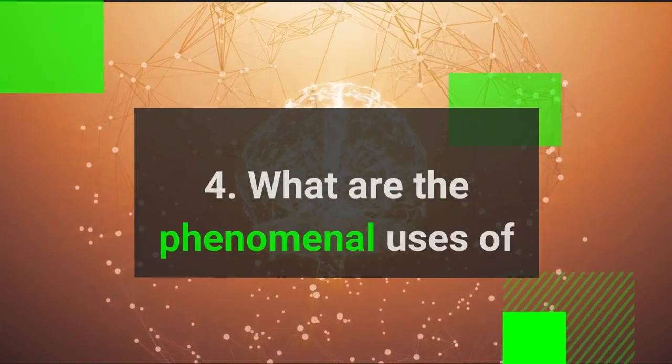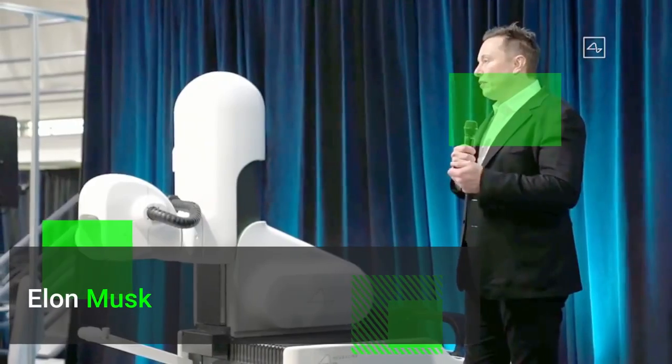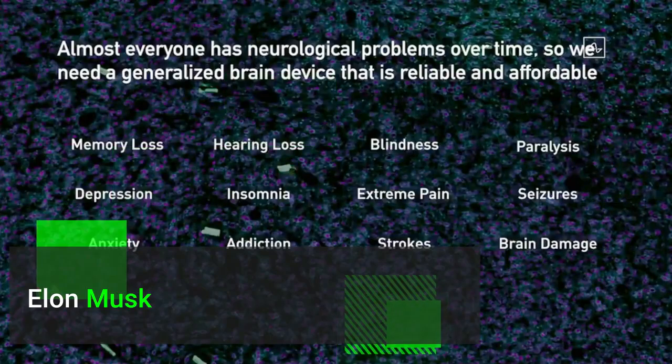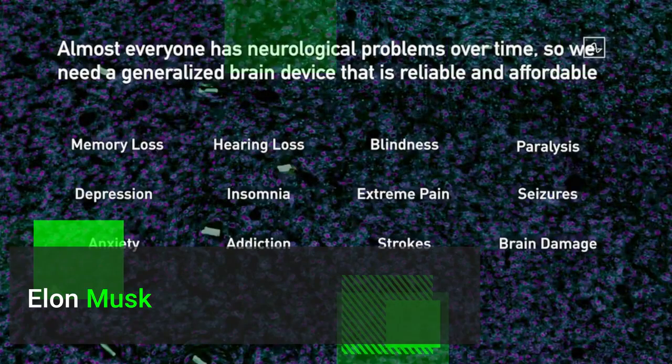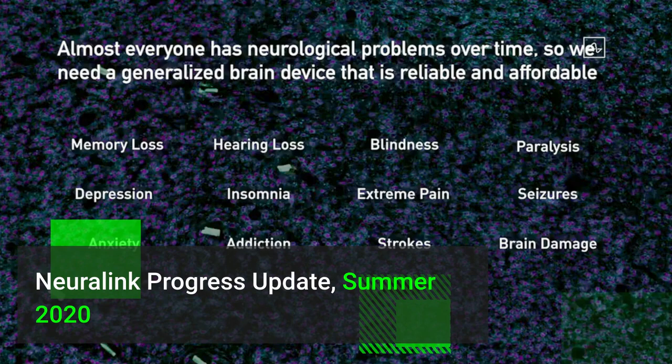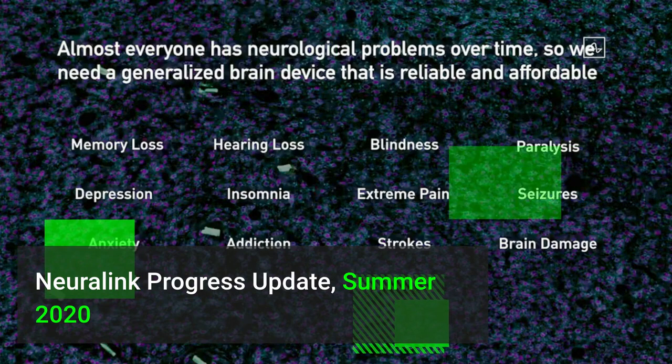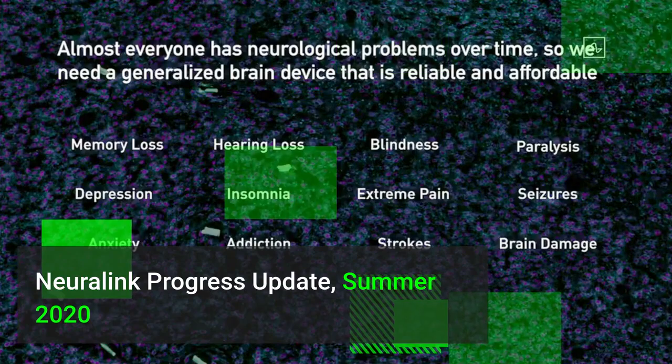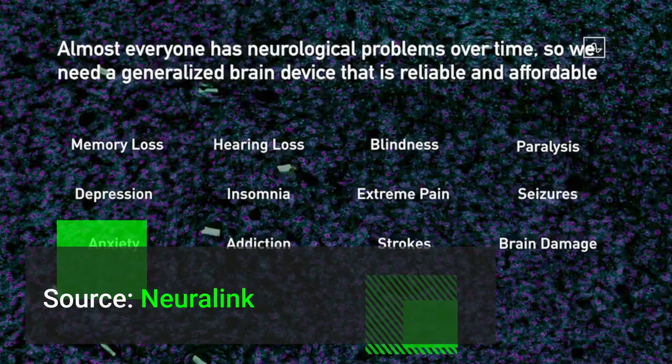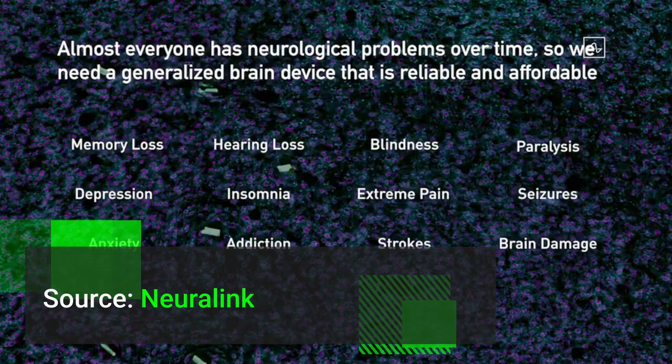What are the phenomenal uses associated to Neuralink? All of your senses, your sight, hearing, feeling, pain, these are all electrical signals sent by neurons to your brain. And if you can correct these signals, you can solve everything from memory loss, hearing loss, blindness, paralysis, depression, insomnia, extreme pain, seizures, anxiety, addiction, strokes, brain damage.